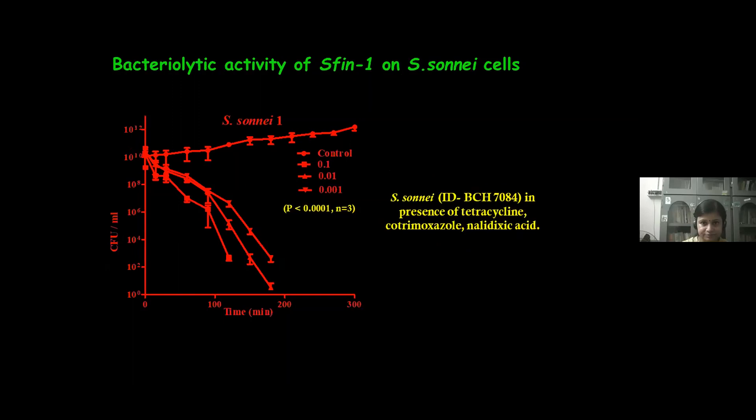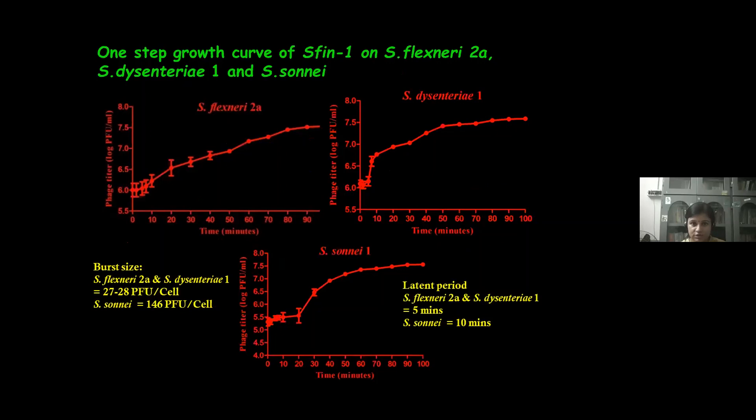The one-step growth curve of SF-1 on Shigella flexneri, dysenteriae, and sonnei shows that the latent period is the same in each case — around five to ten minutes — but the burst sizes are different. For Shigella flexneri and dysenteriae, the burst size is around 27 to 28 PFU per cell, but for Shigella sonnei it is 146 PFU per cell.